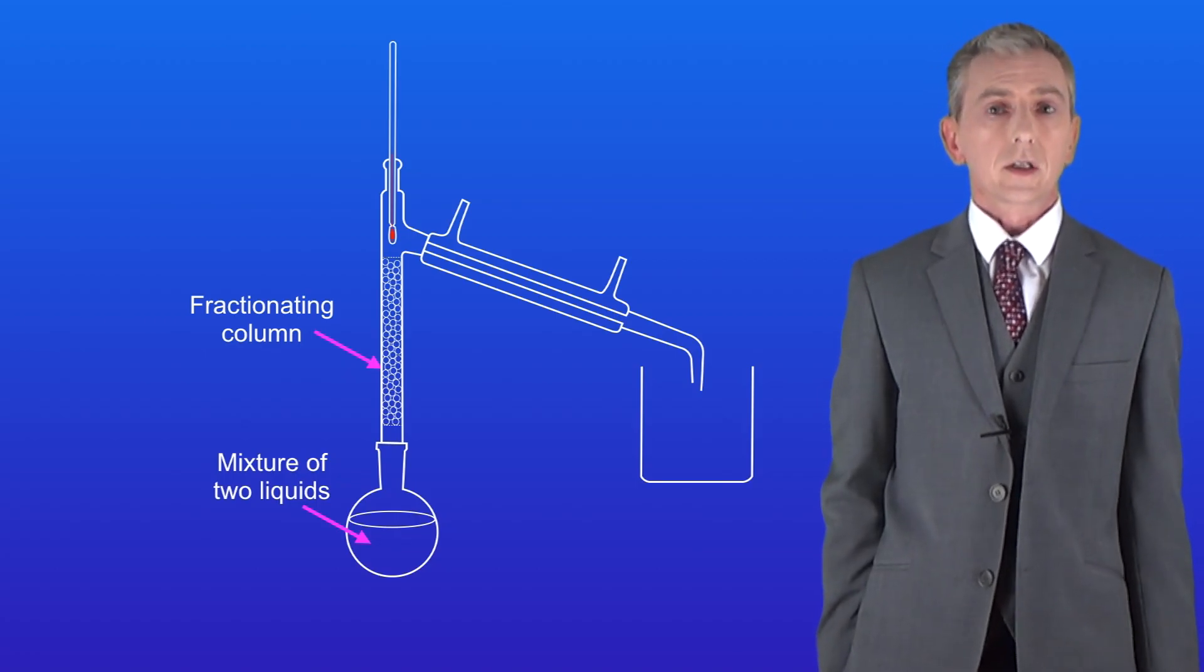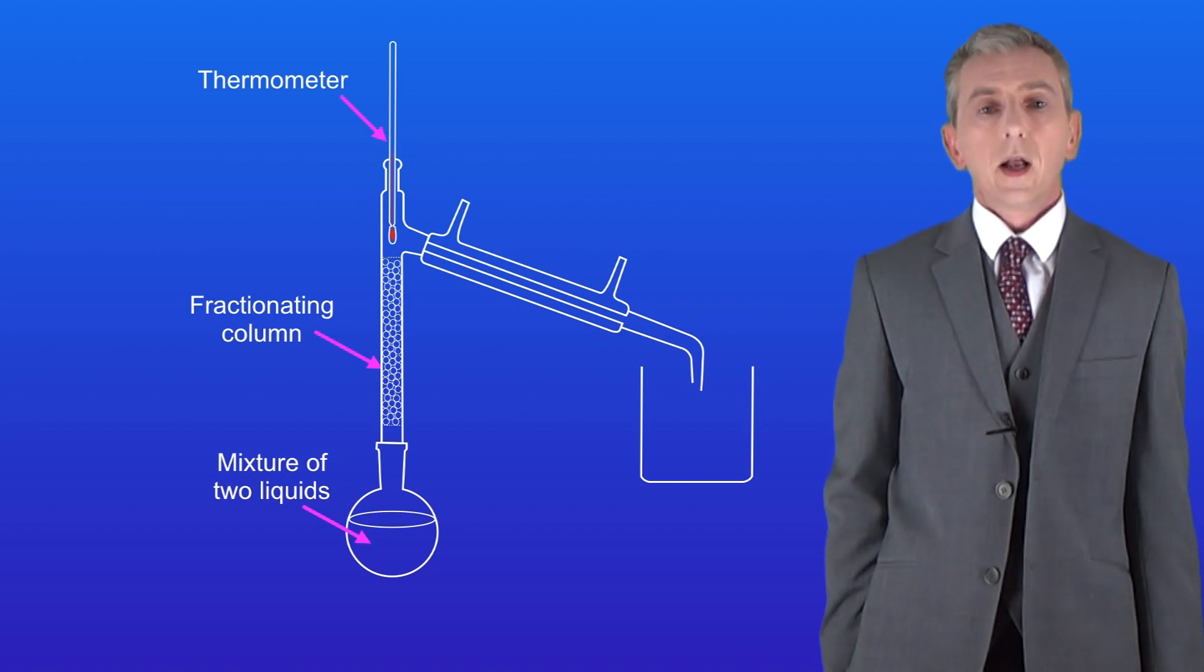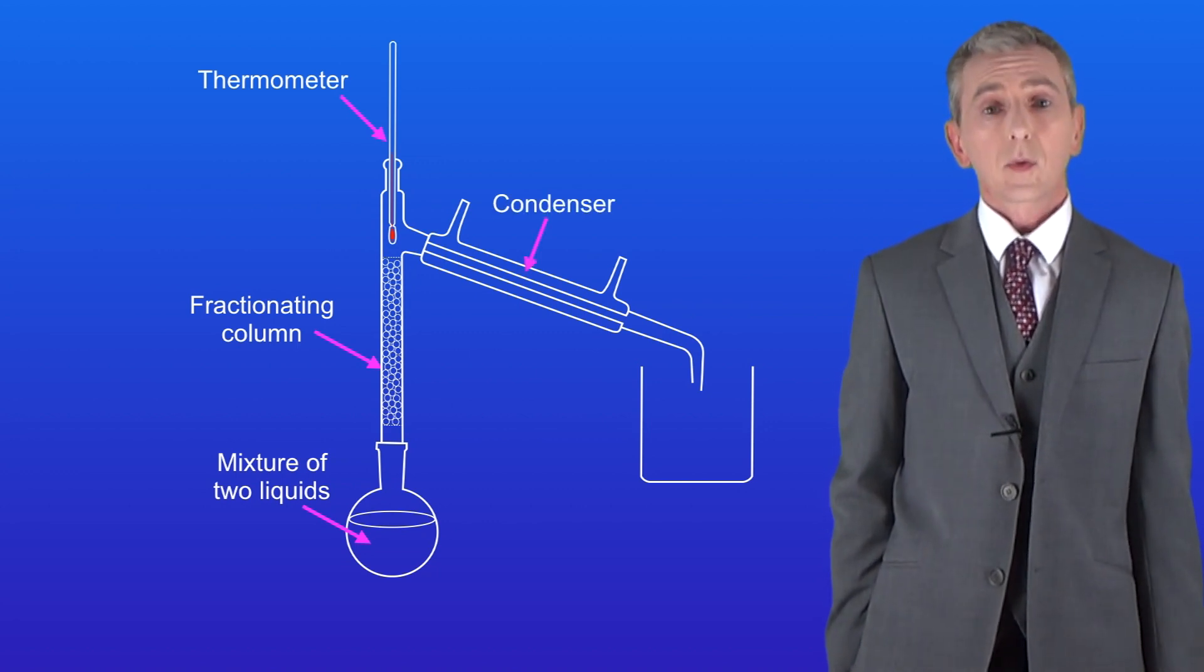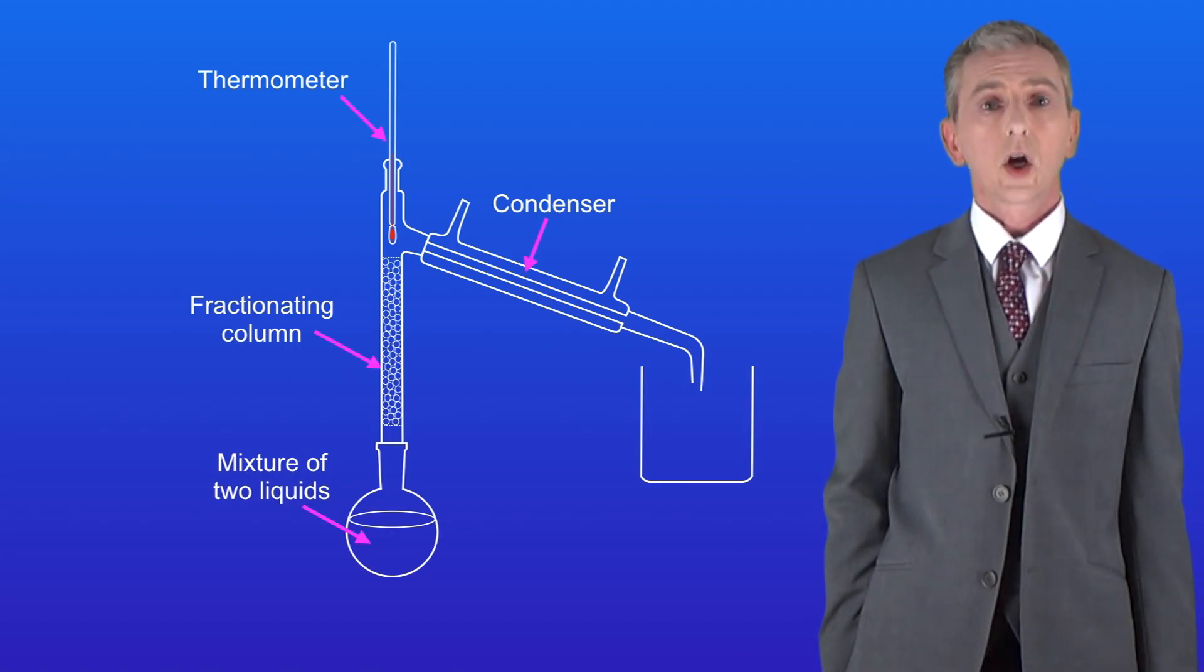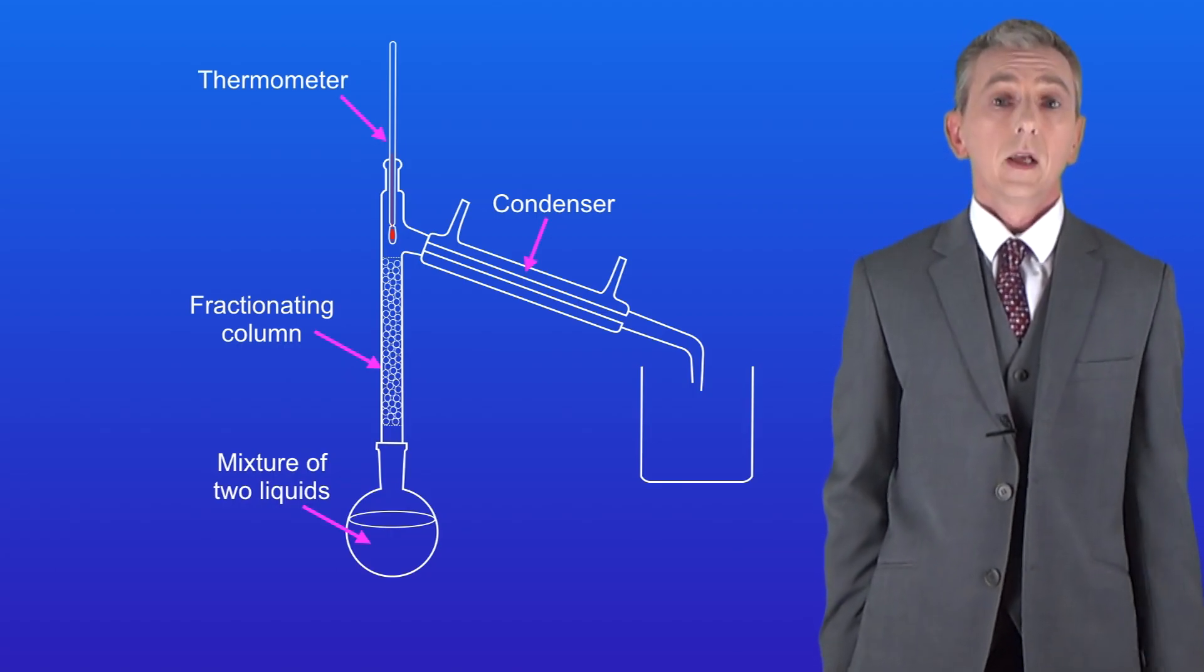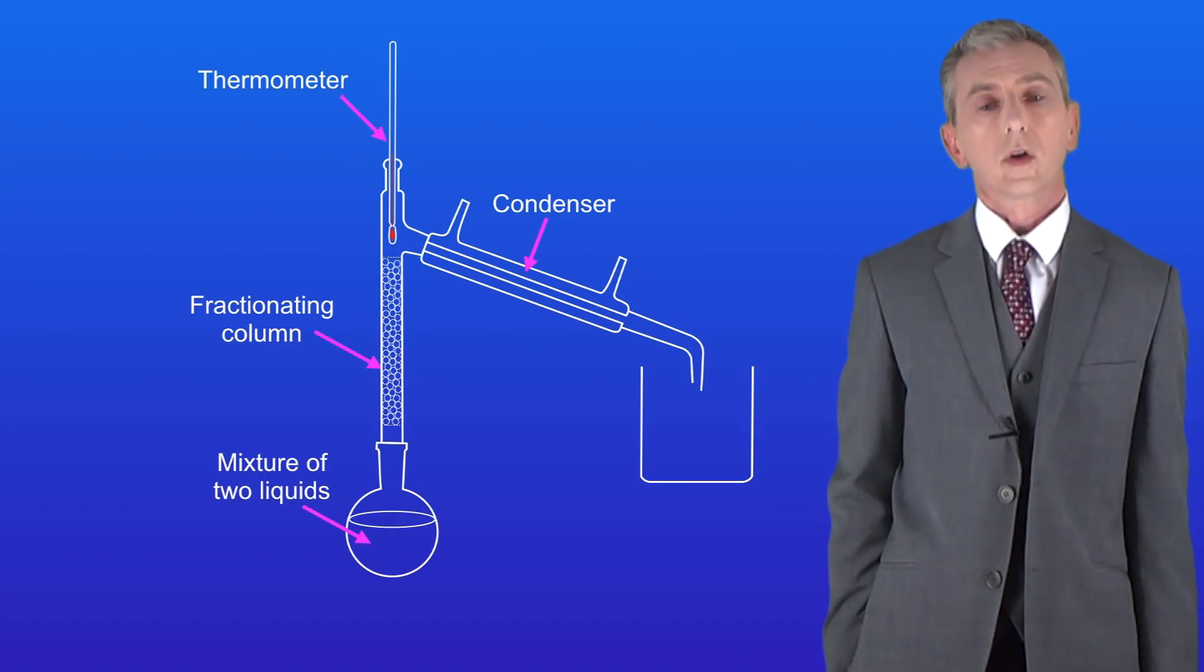At the top of the fractionating column we've got a thermometer and then we've got a condenser just like we saw with simple distillation. Remember that the condenser contains circulating cold water. So let's see how fractional distillation works.